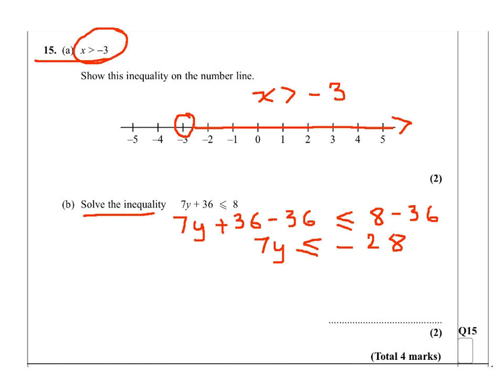Now I will divide by 7 on both sides. So if I divide by 7 here and I will divide by 7, 7 divided by 7 gives me 1. So y will be less or equal to 28 over 7, which is minus 4. So it's all the y's which are less or equal to minus 4.